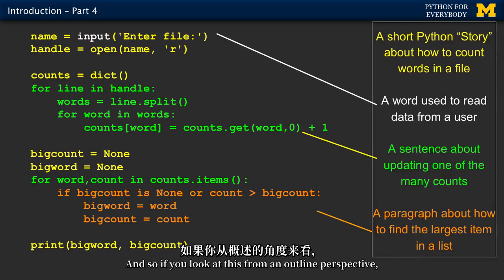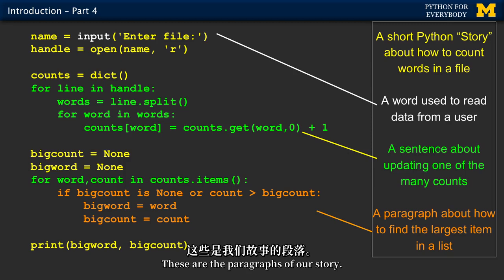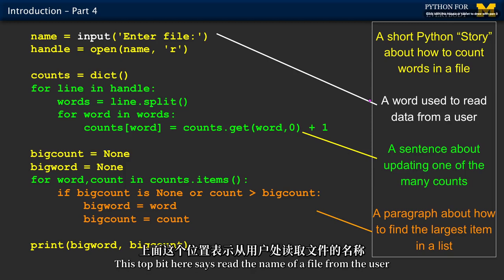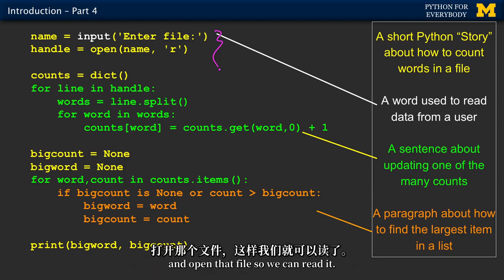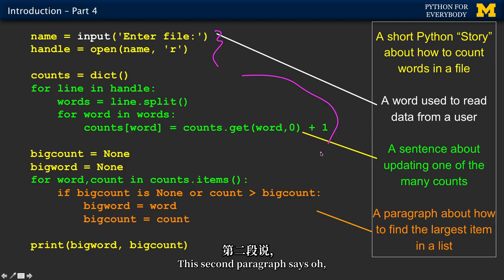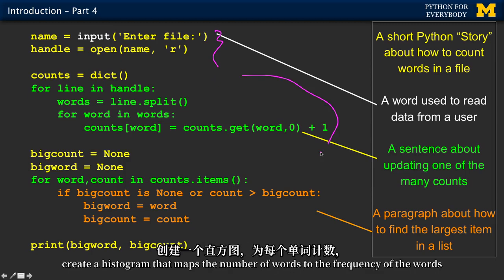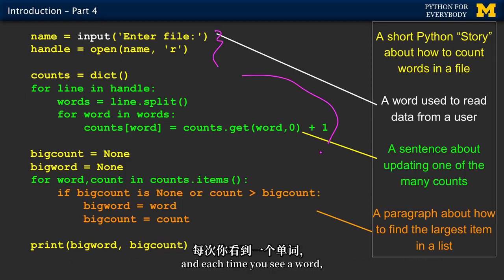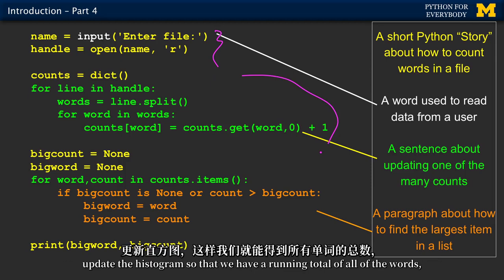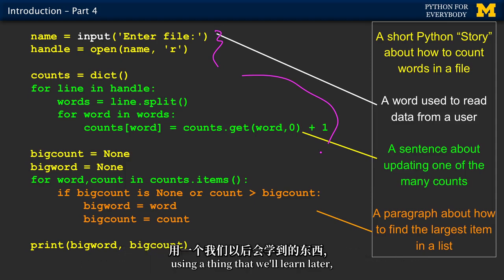If you look at this from an outline perspective, this is our story. These are the paragraphs of our story. This top bit here says, read the name of a file from the user and open that file so we can read it. This second paragraph says, as we read through the file, create a histogram that maps the number of words to the frequency of the words. Each time you see a word, update the histogram so that we have a running total of all of the words.